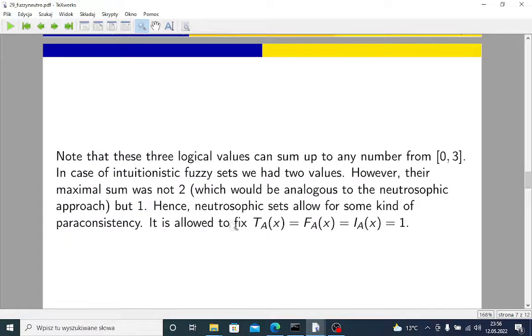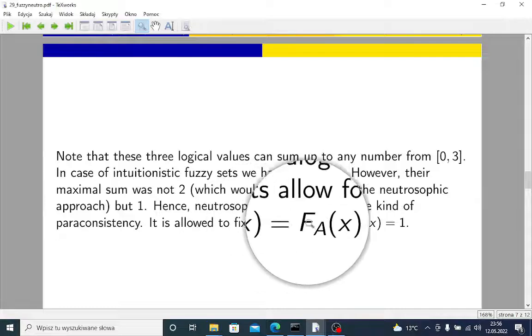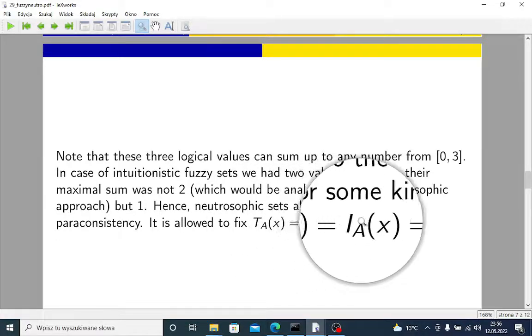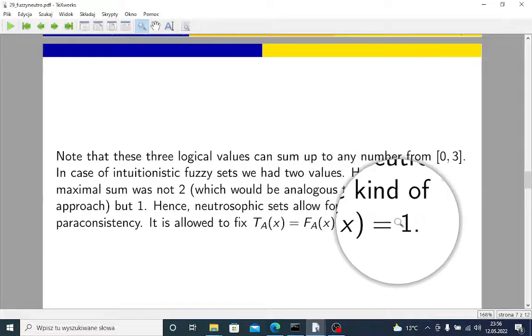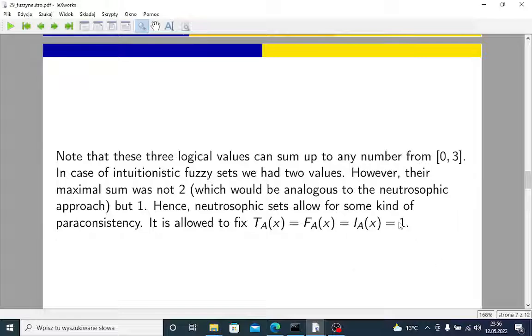And we can have some hesitation margin, but it is allowed to fix truth, just like falsity, just like indeterminacy, just like 1. So this allows for some kind of paraconsistency, as you can read here. This describes ambiguity, embarrassment, confusion.